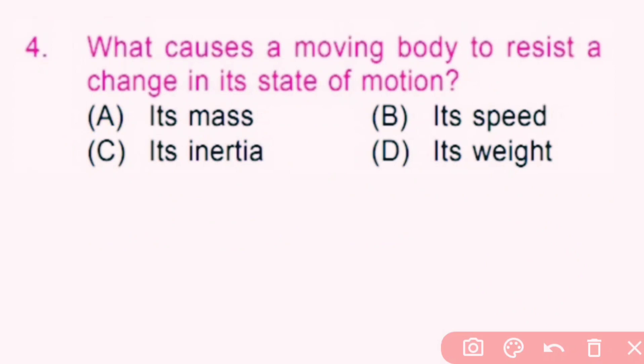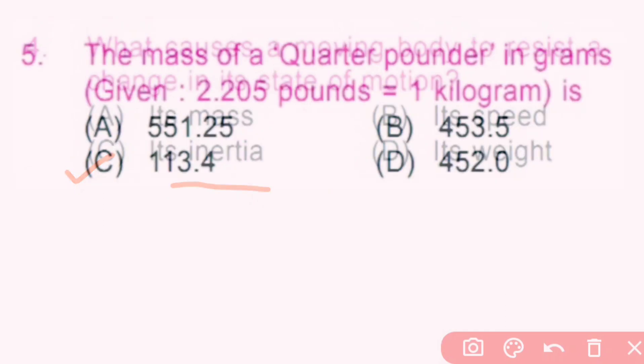Question number 4: What causes a moving body to resist a change in its state of motion? The given options are its mass, its speed, its inertia, and its weight. Inertia is the property of a body due to which it resists a change in its state of rest or of motion. So option C is the correct answer.